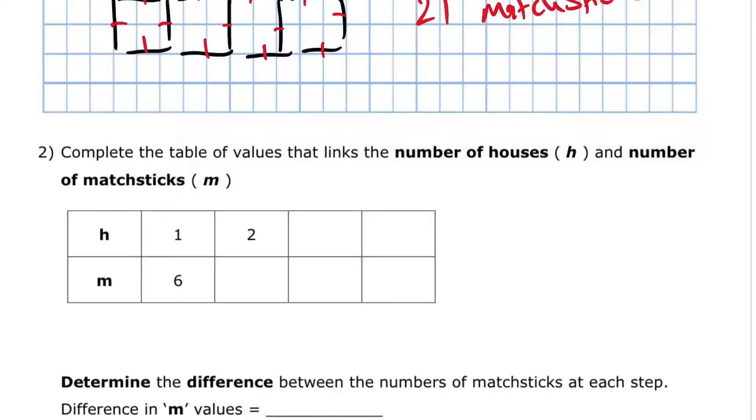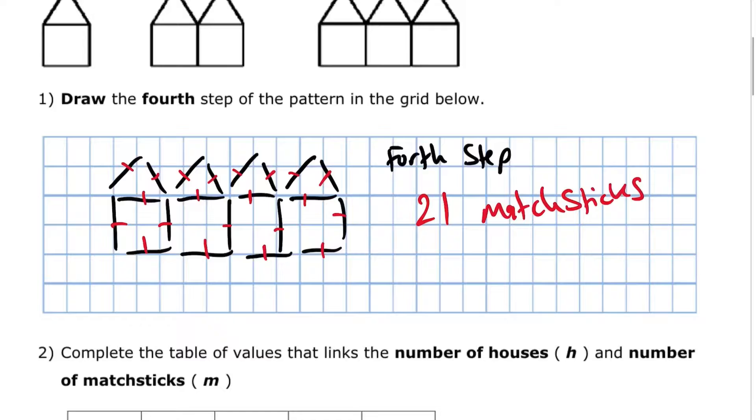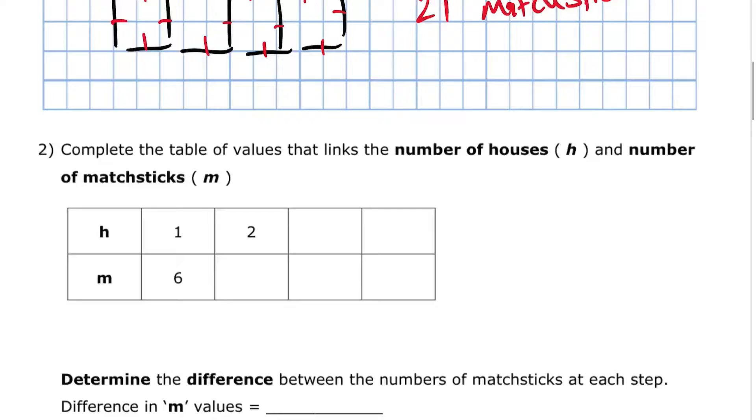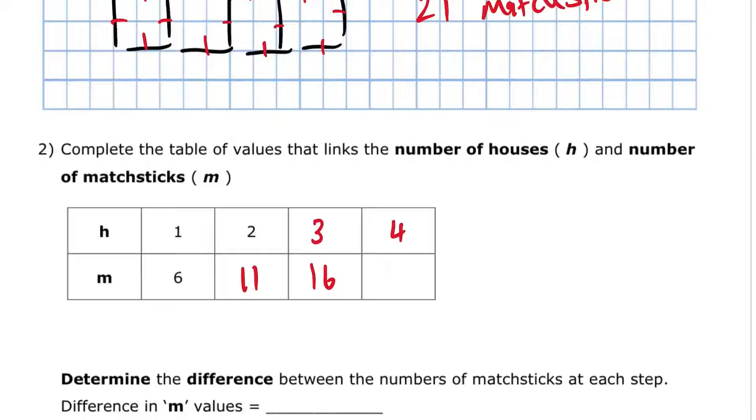Question two. Complete the table of values that links the number of houses, H, and the number of matchsticks, M. So if we count the number of matchsticks in the second stage, there's 11. And the third stage, there's 16. So stage two, 11. Stage three, 16. Stage four, we've got 21.